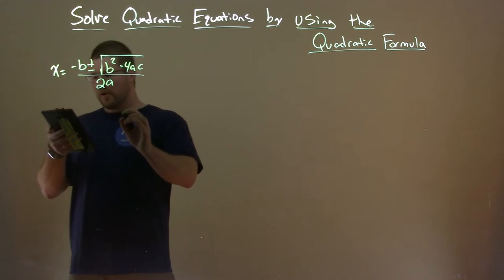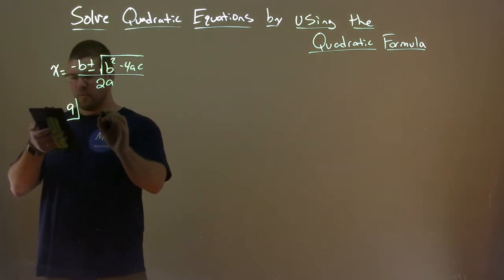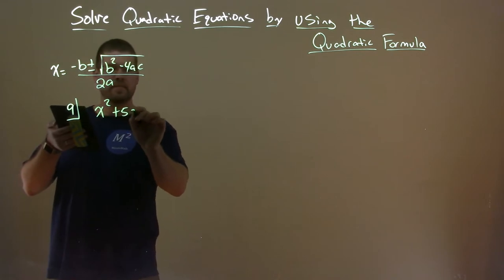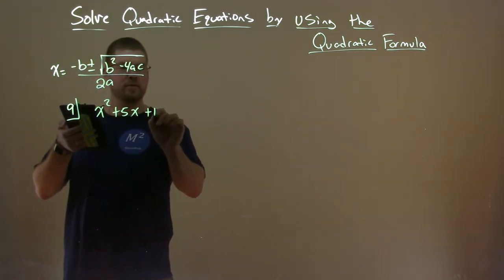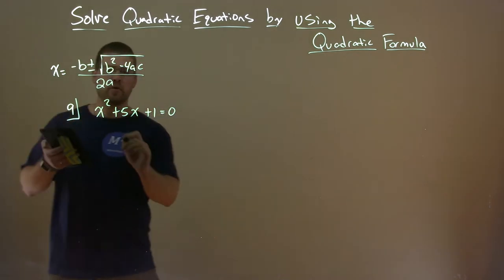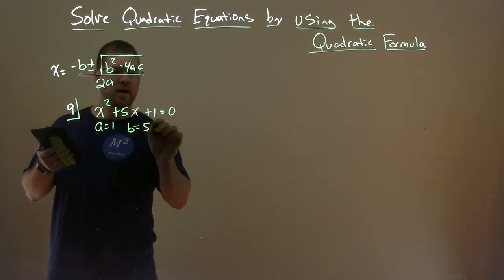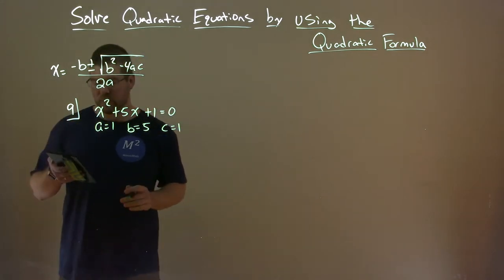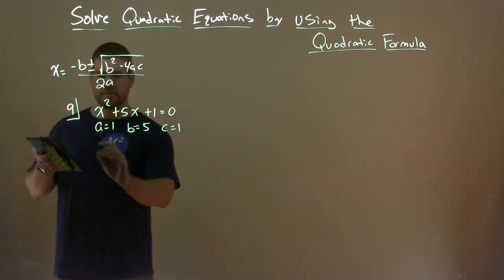So let's go with an example here. We'll solve this using the quadratic formula: x squared plus 5x plus 1 equals zero. So what's our a value? The a value is 1, b value is 5, and the c value is positive 1. Now it's just a plug-and-play with the quadratic formula.